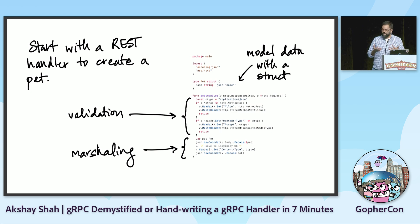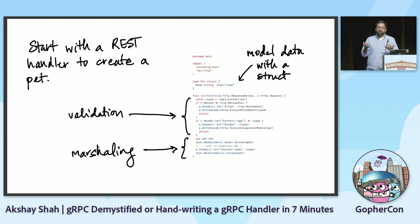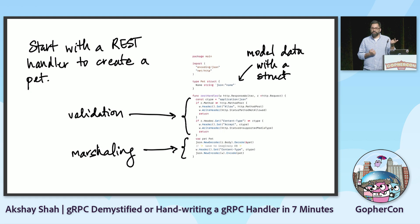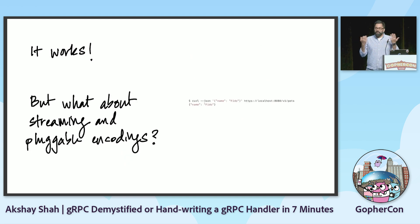We're going to start with a REST handler, just using net/http and encoding/json. And for many of you, this is very familiar code. This handler creates a pet resource, and we model our data using a simple Go struct. We have the usual HTTP handler signature. We do a little bit of validation to make sure that we're getting a POST with the application/json content type, and then we do some marshaling and unmarshaling using encoding/json. Nothing unusual. And it works — we can call this handler with curl.